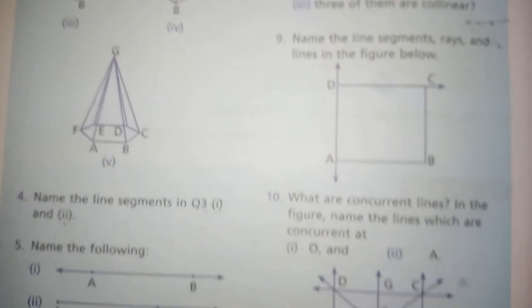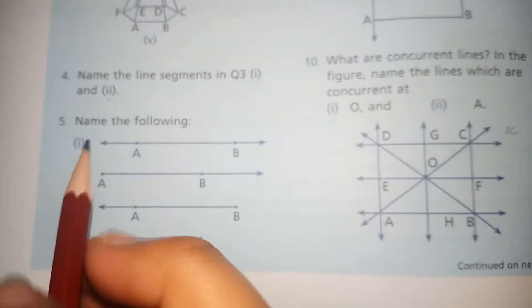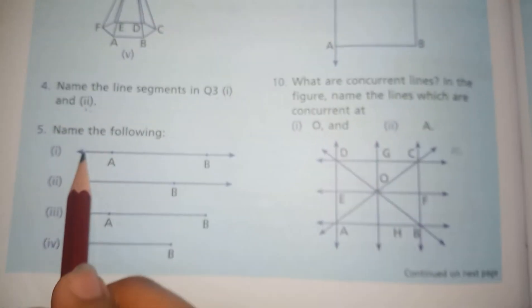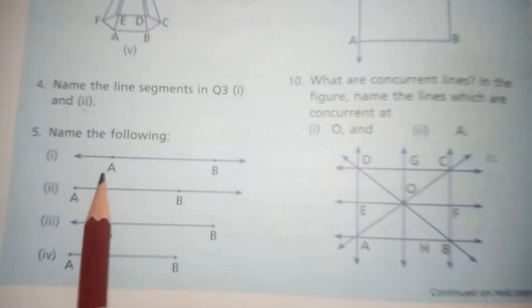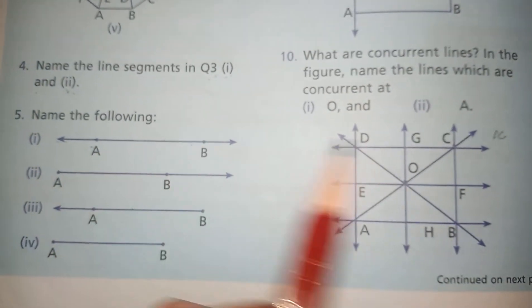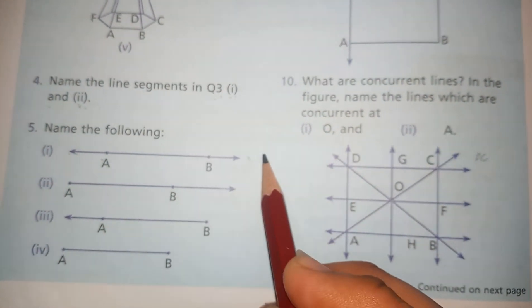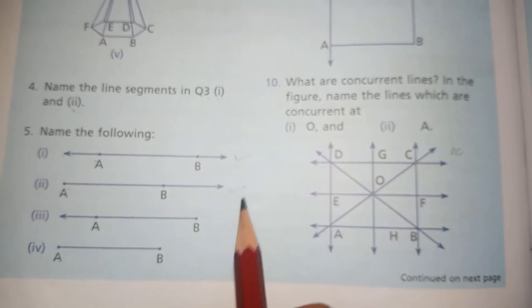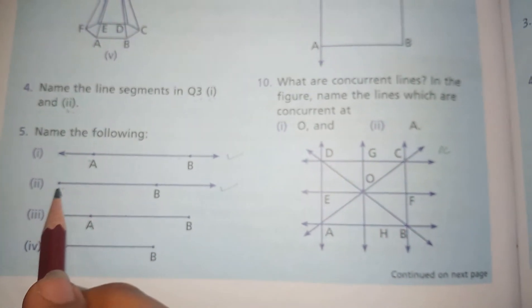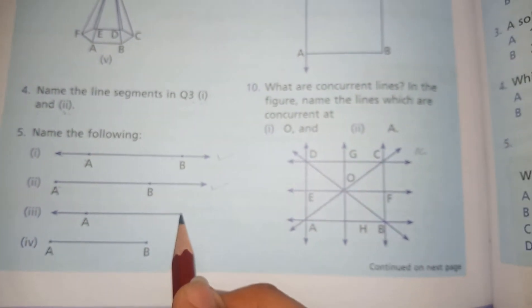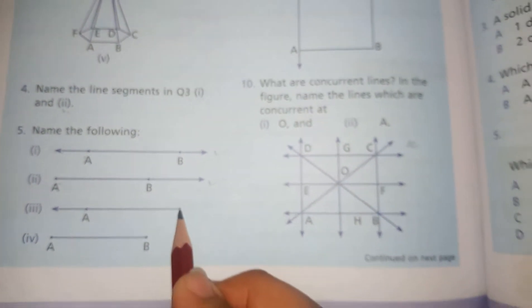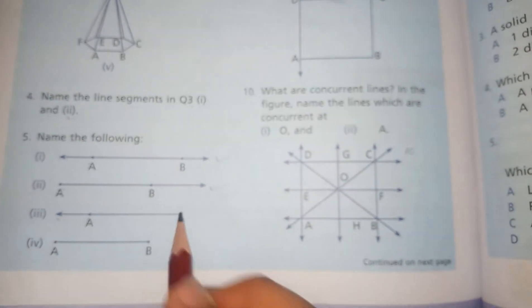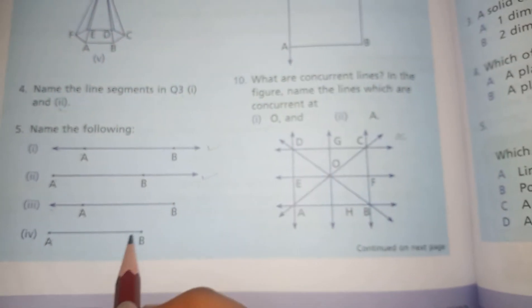Now come to question number five — name the following. What is the name of this figure which has a line segment? You can see this is a line segment. That is line segment AB.